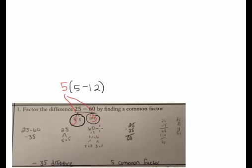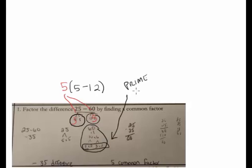Now what this student did is he also broke 60 up into 5 times 2 times 3 times 2. Now this is a prime factorization — it's called that because all those numbers are prime numbers. When you factor a number and get as far as you can, 5, 2, and 3 are all prime numbers. In this case, we don't need to go that far. All we need to do is find out what is a common factor — what do these two terms share.